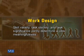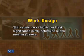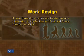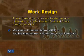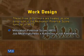Skill variety, task identity, and task significance jointly determine job meaningfulness. These three dimensions are treated as one dimension in a formula called the Motivation Potential Score (MPS). MPS equals job meaningfulness multiplied by autonomy multiplied by job feedback. This formula helps determine the overall impact of work design on total productivity.